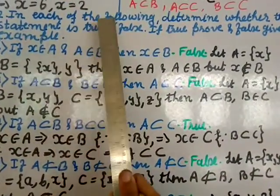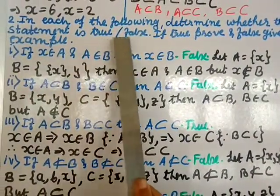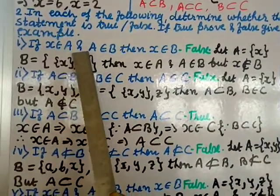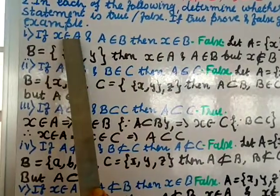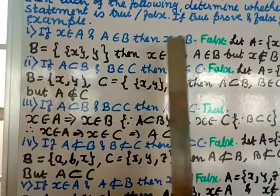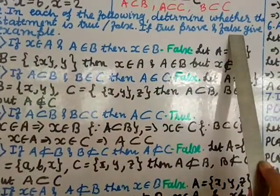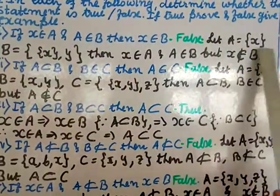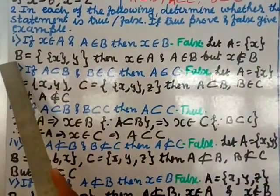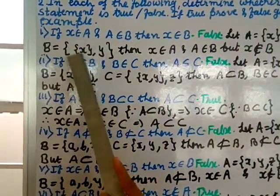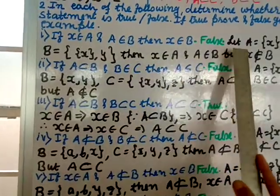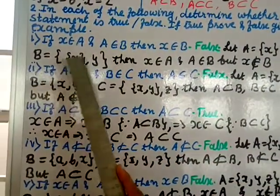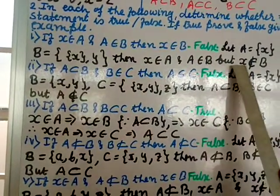Question number two: determine whether each statement is true or false. If true, prove it; if false, give an example. Statement 1: if x ∈ A and A ∈ B then x ∈ B. This is false. For a counterexample, let A = {x} and B = {{x}, y}. Then x ∈ A and A ∈ B, but x is not an element of B — it is a set within B, not a direct element.